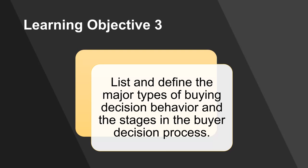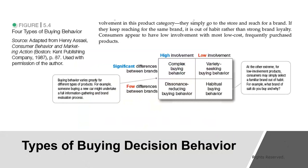Let's look at objective three — listing and defining buying decision behavior. Now we know how to get into people's black box, but how do they make buying decisions? This is a type of buying behavior matrix: on one axis, significant versus few differences between brands; on the other, high versus low involvement. High involvement with significant differences between brands is complex buying behavior — displayed when purchasing a car. There are obviously different types of cars and you have to be highly involved in defining what car you want.